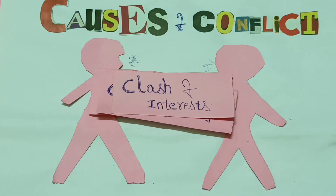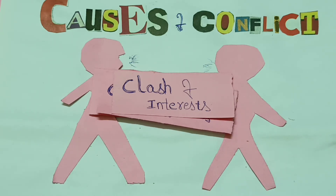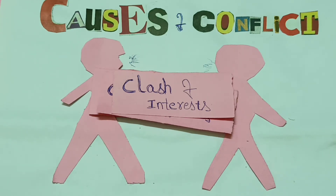The interests of different people or groups occasionally clash. For example, the interests of workers clash with those of employers, which leads to conflict in the form of strikes and lockouts in industries or factories. So clash of interest is one of the causes for conflict.